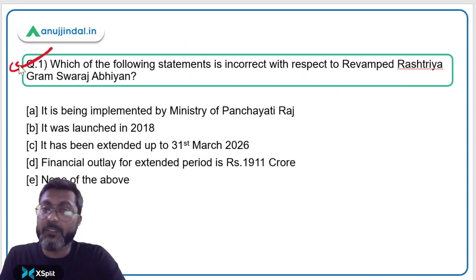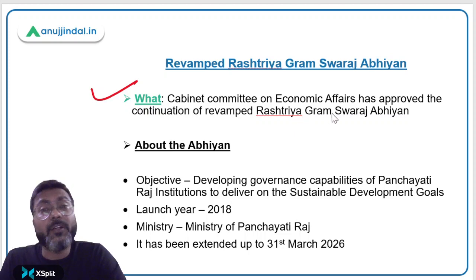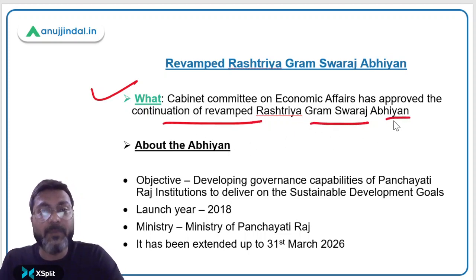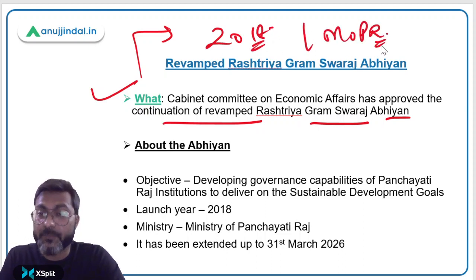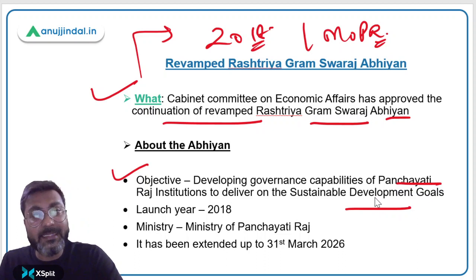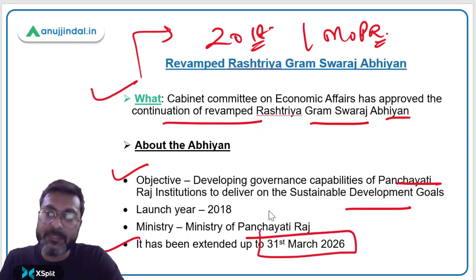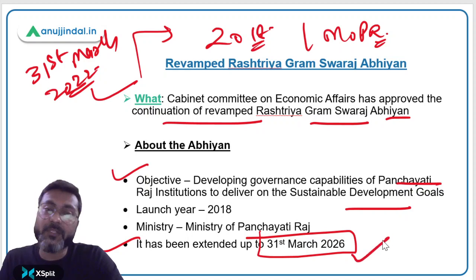The first question — very important for the upcoming RBI exam — asks which statement is incorrect with respect to the Revamped Rashtriya Gram Swaraj Abhiyan. This scheme is in news because the Cabinet Committee on Economic Affairs has approved its continuation. It was launched in 2018, implemented by the Ministry of Panchayati Raj, and its objective is to develop the governance capabilities of Panchayati Raj institutions to deliver on the Sustainable Development Goals. It has now been extended from 1st April 2022 to 31st March 2026.